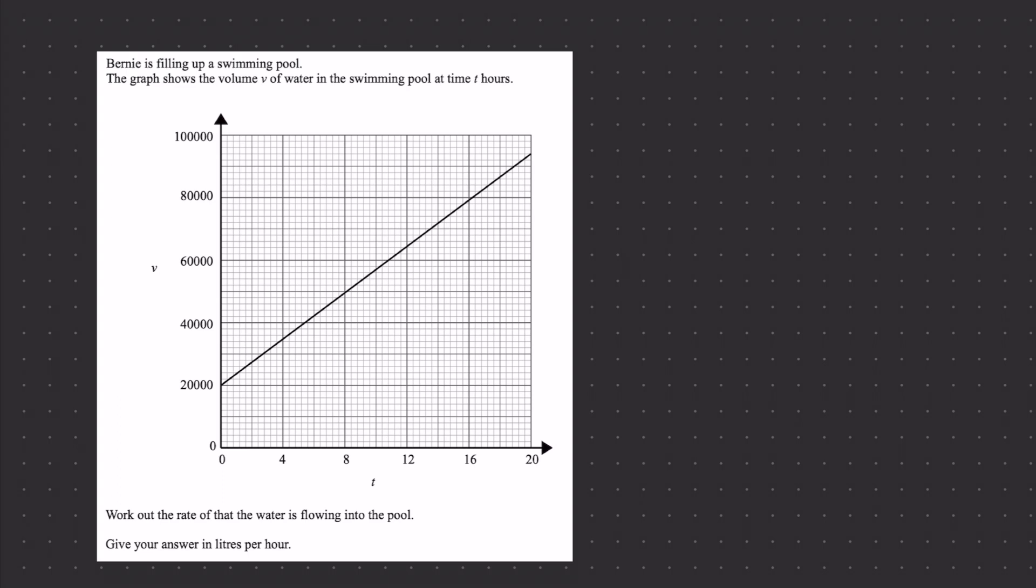So we discussed earlier that rate indicates the gradient of the graph. We know it's a constant rate, a constant gradient, because it is of course a straight line. That means all we have to do for this question is double check the units and then calculate the final answer. The volume is given in liters on the v-axis or the vertical y-axis and the time is given in hours on the x-axis.